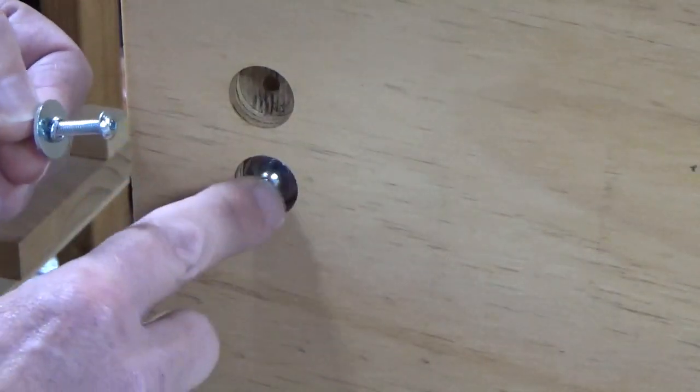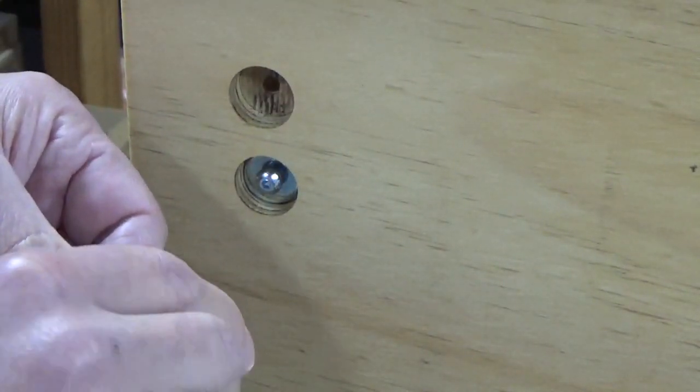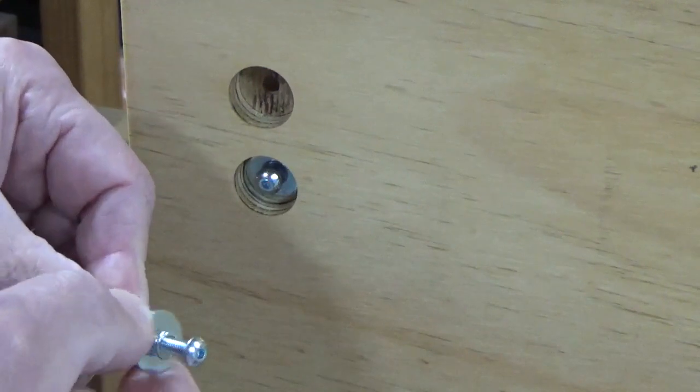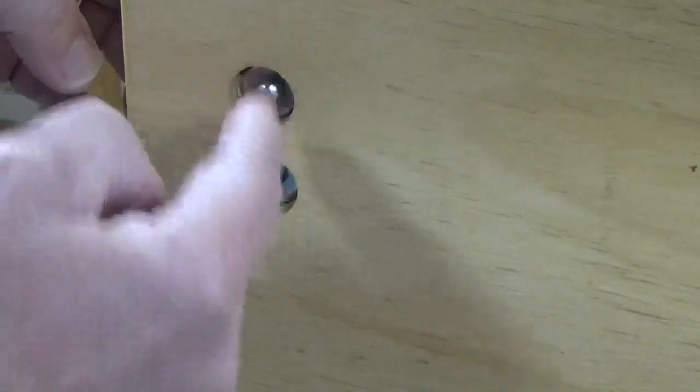So what we've got is the machine screws going through, and as you can see we've got the machine screw, a spring washer, and we've got a fender washer which is the wider washer that we're using, and that all fits into the hole just nice and neatly.